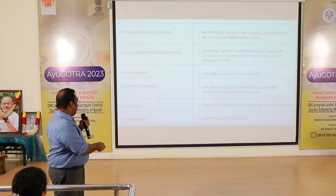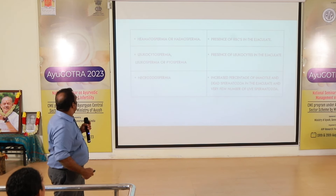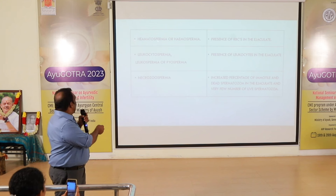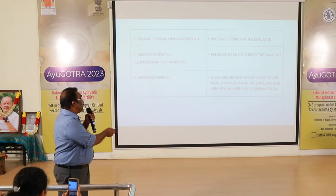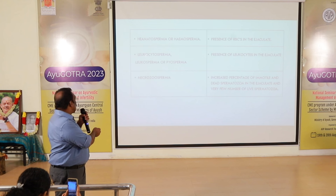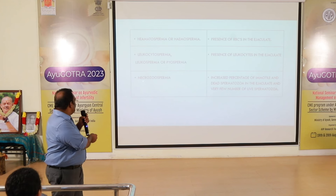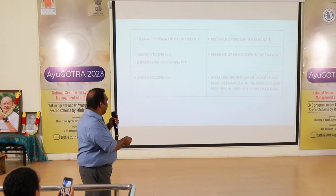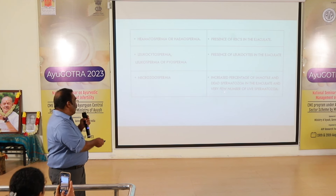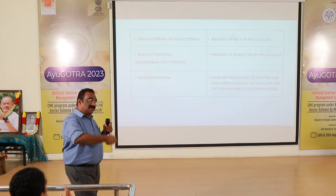Hypospermia means low volume of ejaculate. Hematospermia or hemospermia means presence of RBCs in the ejaculate. Leukocytospermia, leukospermia, or pyospermia means presence of leukocytes in the ejaculate. Necrospermia means an increased percentage of immotile and dead spermatozoa in the ejaculate with very few live spermatozoa.